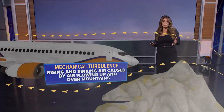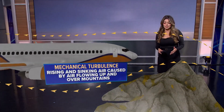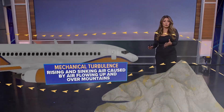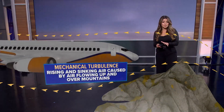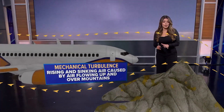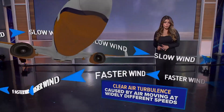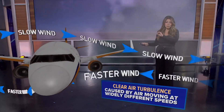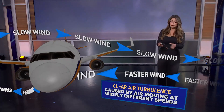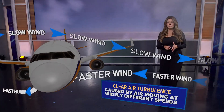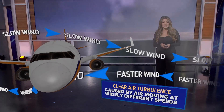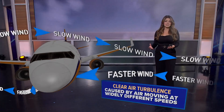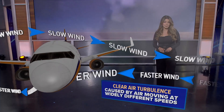We also have something called mechanical turbulence, caused by rising and sinking air around and over mountains. Generally you'll feel this if you are flying into Denver International Airport. And then there's clear air turbulence — this one has no visible signs, which makes it the most dangerous, and it's caused by air moving at widely different speeds, generally when we have jet streams during certain types of seasons and in certain types of climates.